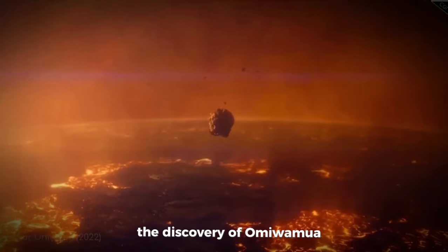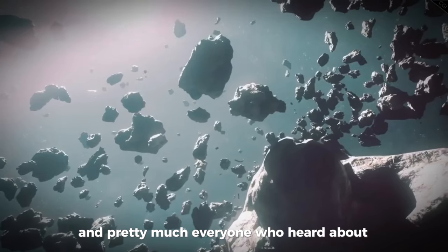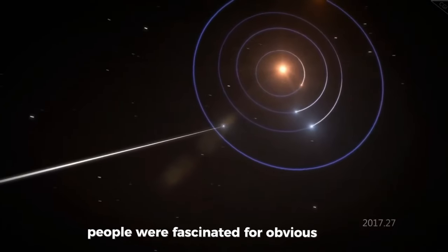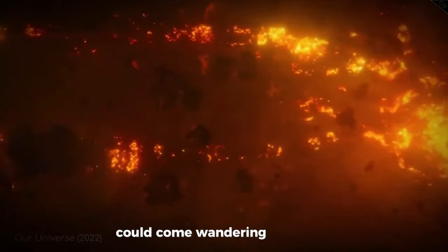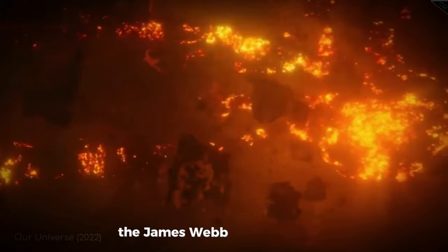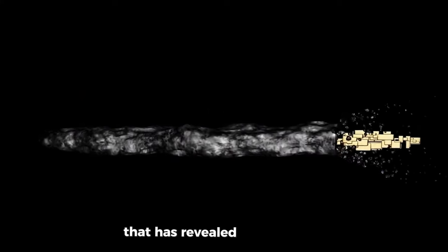The discovery of Oumuamua set off many questions among scientists and pretty much everyone who heard about it. People were fascinated for obvious reasons. Here was tangible proof that stuff from way beyond our solar system could come wandering in. And now, the James Webb Space Telescope has finally captured a shocking image of this object that has revealed its true nature.